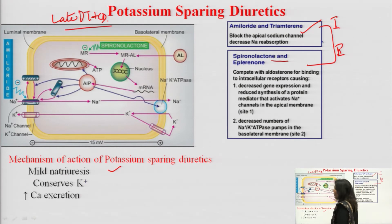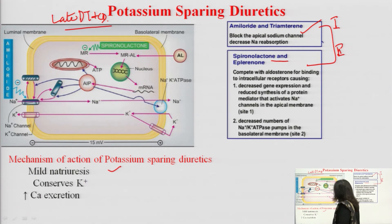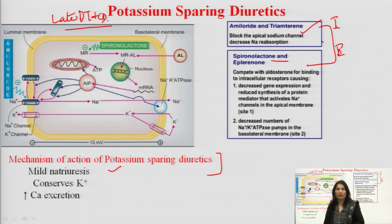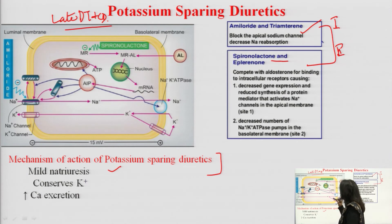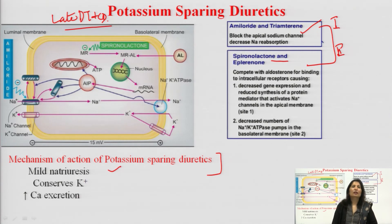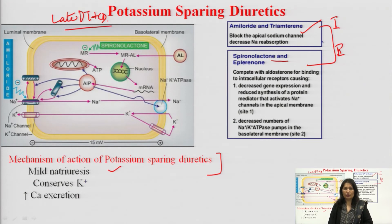First, the mechanism of action of spironolactone, which is a mineralocorticoid receptor antagonist. These drugs are important because they conserve potassium. Spironolactone is an aldosterone antagonist, chemically related to aldosterone, and is itself a steroid. Aldosterone is a mineralocorticoid hormone.